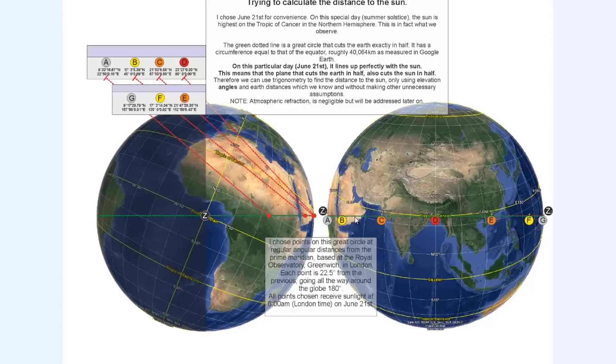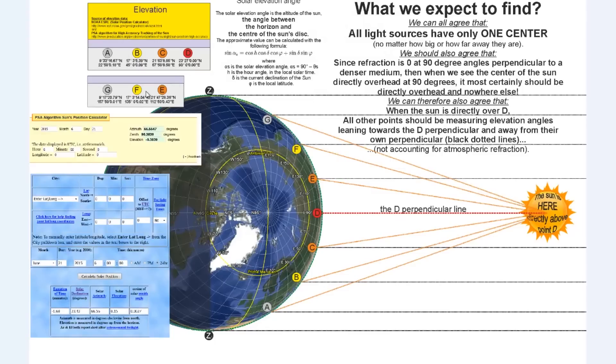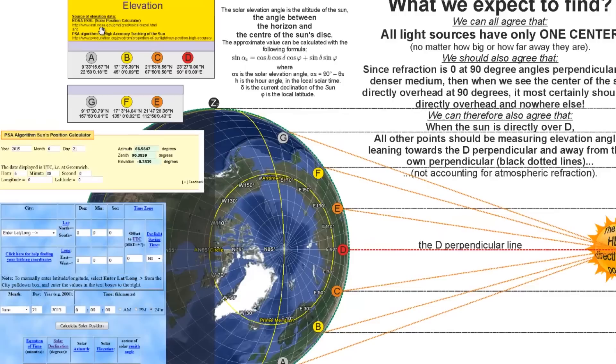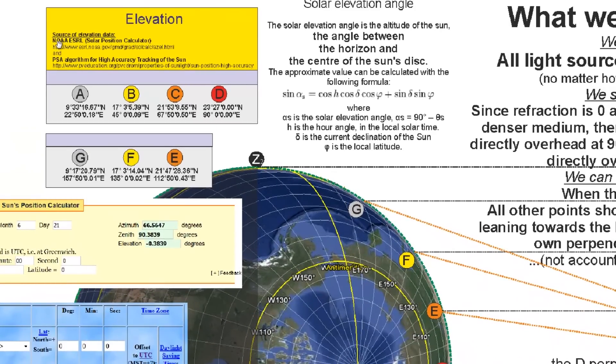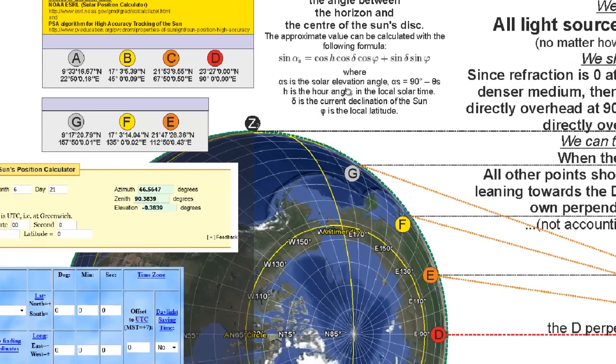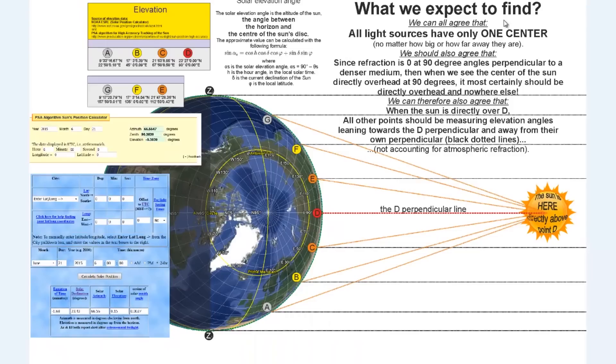Please note that atmospheric refraction, although negligible, will be addressed later on. I choose points on this great circle at regular angular distances from the prime meridian base in Greenwich, London. This is the prime meridian. Each point is spaced two and a half degrees from the previous one, going all the way around the globe 180 degrees. All points chosen receive sunlight at 6 a.m. London time on June 21st. These are the coordinates of each point, and the elevation data is provided by two different sources, the NOAA solar position calculator and the PSA algorithm for high accuracy tracking of the Sun. The solar elevation angle is the altitude of the Sun, the angle between the horizon and the center of the Sun's disk.